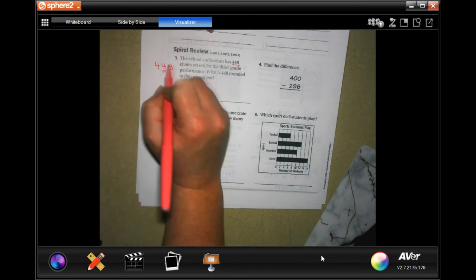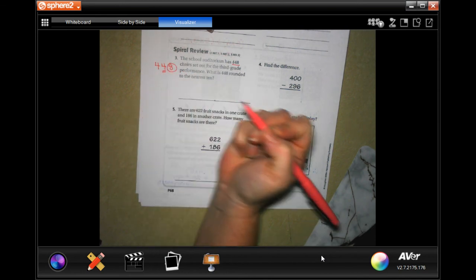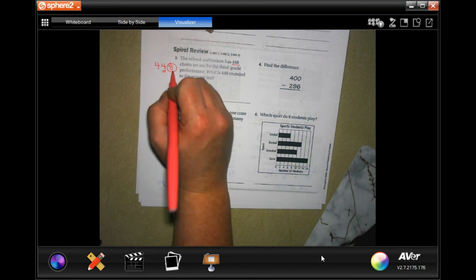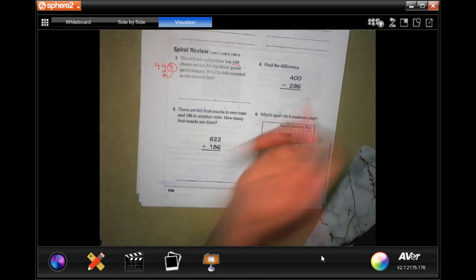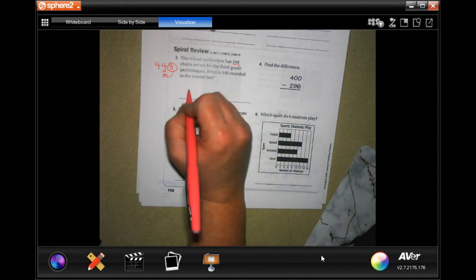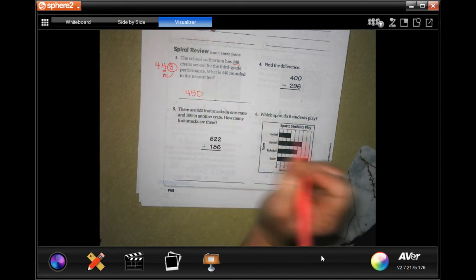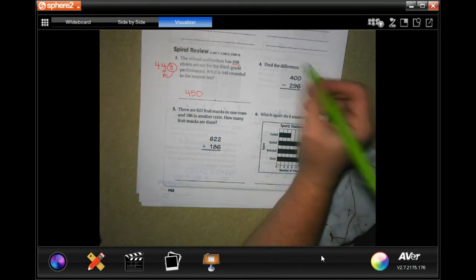Once it's rounded to the nearest 10, I'm going to be looking at the eight. If it's five or bigger it makes that four go up to a five. If it's not, it stays the same. Well, eight is definitely bigger than five, so it's going to be 450. We're going to find the difference, so we're just subtracting guys.